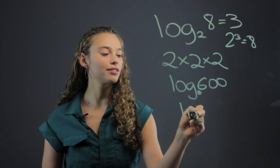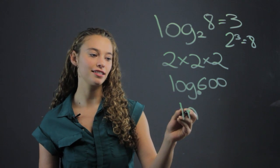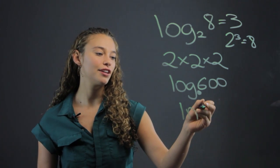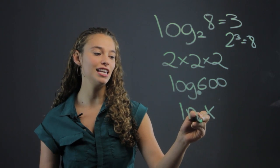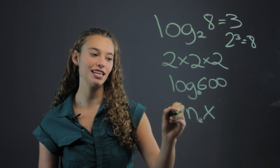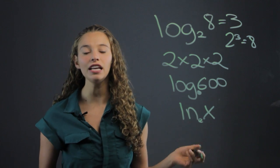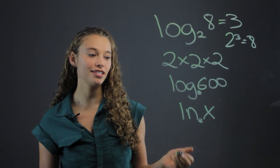There's also natural logs, which look like this: ln of some number. That's actually where there's an e here, but we don't need to write the e, we just write it ln. There's also a few different properties that are good to know.